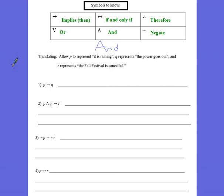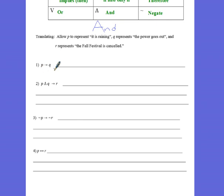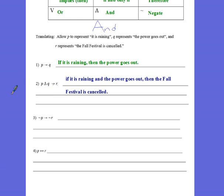Alright, so here are some problems in which you would use those symbols where we kind of give you a scenario symbolically. And then you just have to write out sort of what they would interpret to. So this first one we're allowing P to represent the phrase it is raining. Q represents the power goes out. And R represents the fall festival is cancelled. So three letters now. P, Q and R. So here's what that would look like. P implies Q. So we would write that out as if it is raining then the power goes out. This one here is P and Q implies R. So we can say if it is raining and the power goes out then the fall festival is cancelled.